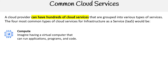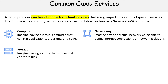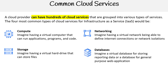We have compute — imagine having a virtual computer that can run applications, programs, and code. Then you have storage — imagine having a virtual hard drive that can store files. You have networking — imagine a virtual network being able to define internet connections or network isolations. And you have databases — imagine a virtual database for storing reporting data or a database for a general purpose web application. So those are the four cores.